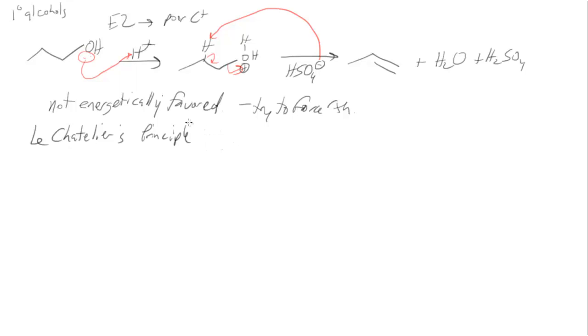Le Chatelier's principle has a lot of uses during organic chemistry. So for example, Le Chatelier's principle says is that any system that's at equilibrium, if we disturb that equilibrium, the system will readjust to reestablish the equilibrium. So what that means is that if this comes to equilibrium, even if it's mainly favoring the reactants, if I can remove either of my products, either the alkene or the water, it will readjust to establish equilibrium to the right and it will force the reaction forward.